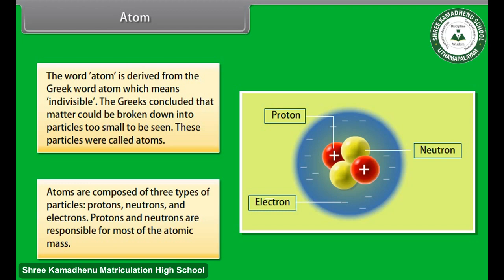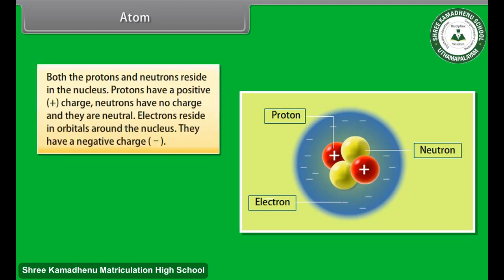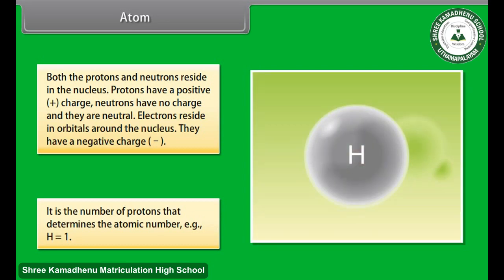Protons and neutrons are responsible for most of the atomic mass. Both the protons and neutrons reside in the nucleus. Protons have a positive charge. Neutrons have no charge and they are neutral. Electrons reside in orbitals around the nucleus. They have a negative charge. It is the number of protons that determines the atomic number. That is, H is equal to 1.